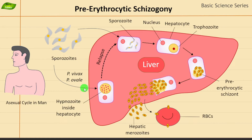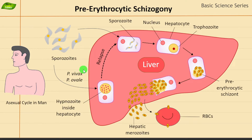The major species causing human illness include Plasmodium falciparum, Plasmodium vivax, Plasmodium ovale, Plasmodium malariae, and Plasmodium knowlesi. Among all of them, Plasmodium falciparum is the most lethal form of malaria.